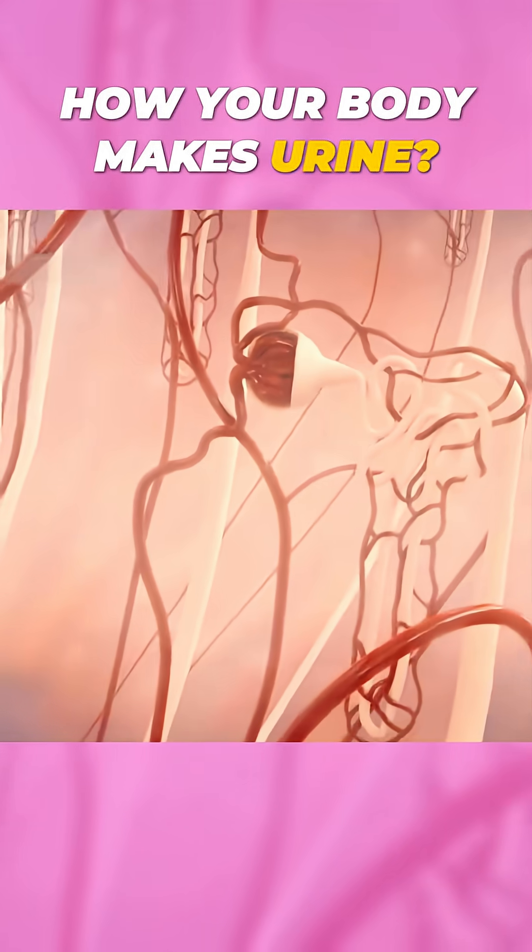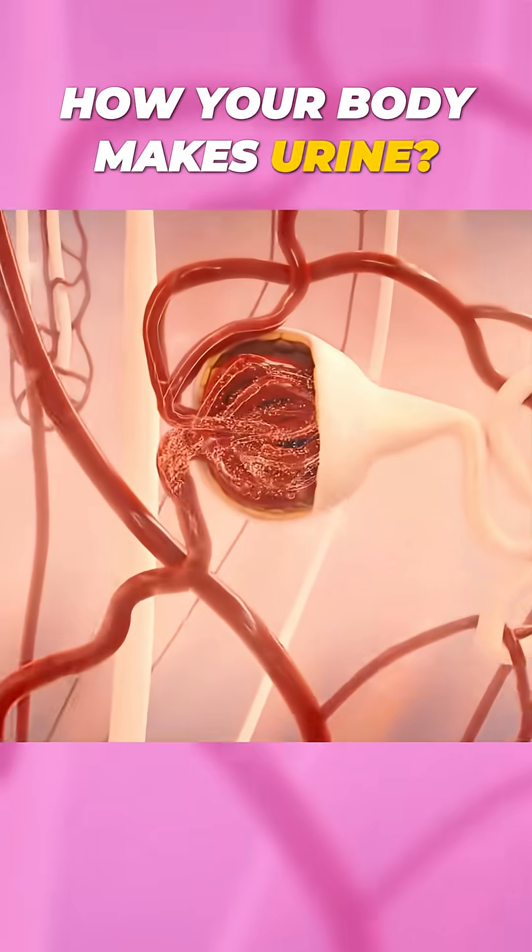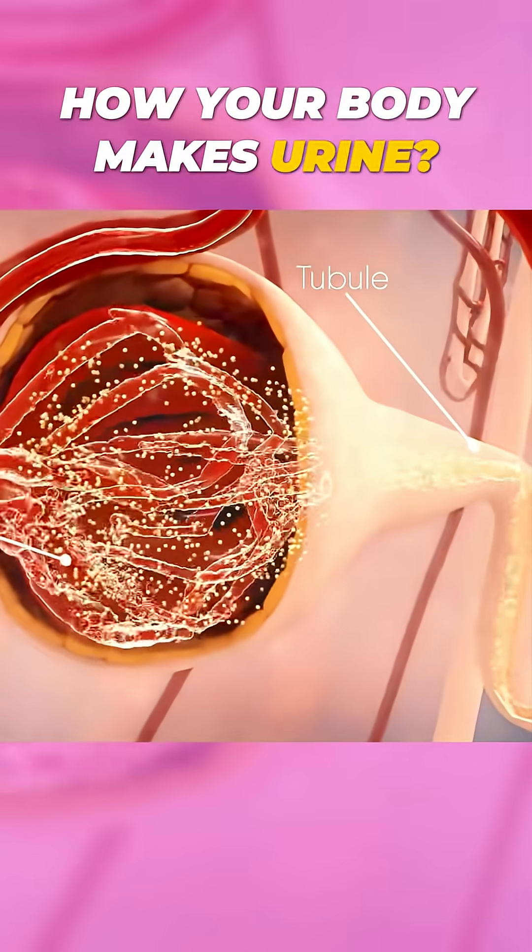Inside the kidneys are millions of tiny filters called nephrons. You can only see them with a microscope. Each nephron has a glomerulus, a small filter, attached to a tubule.